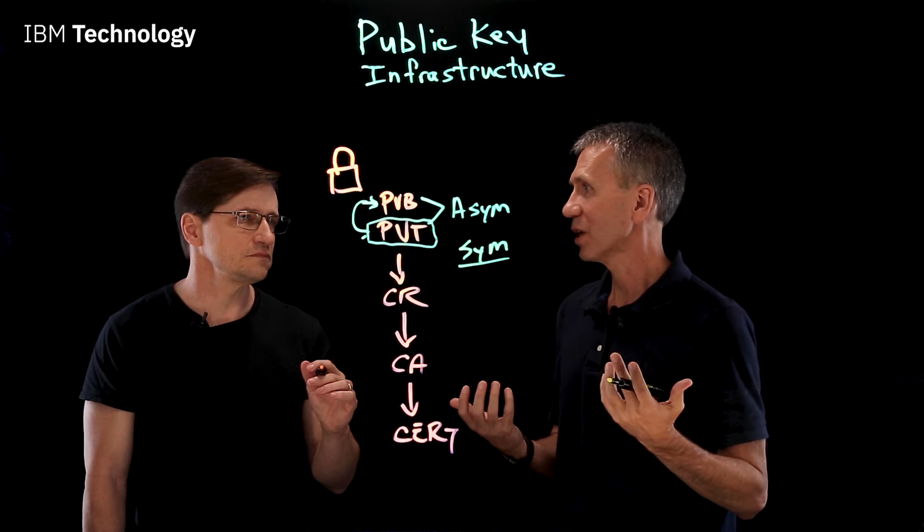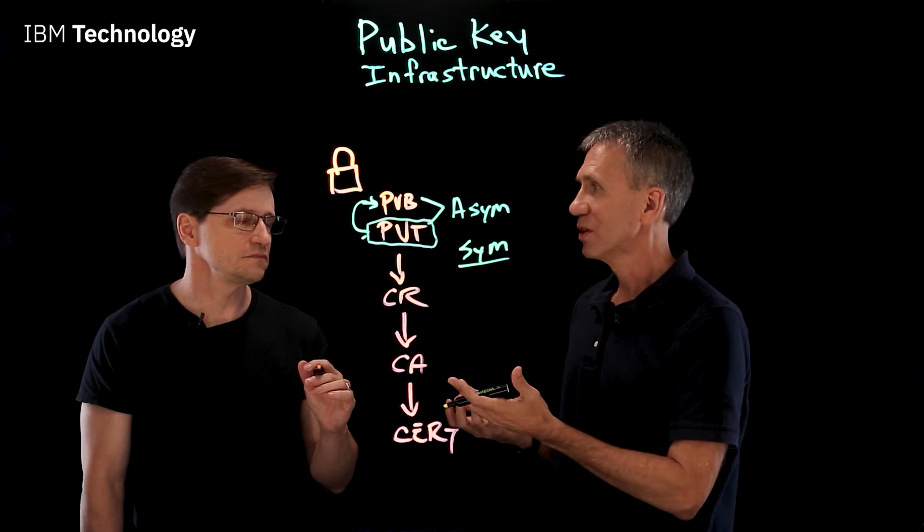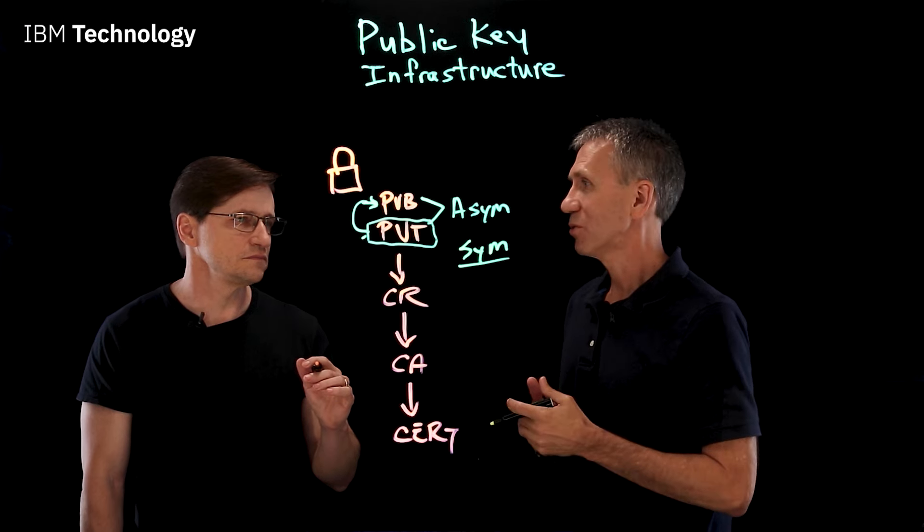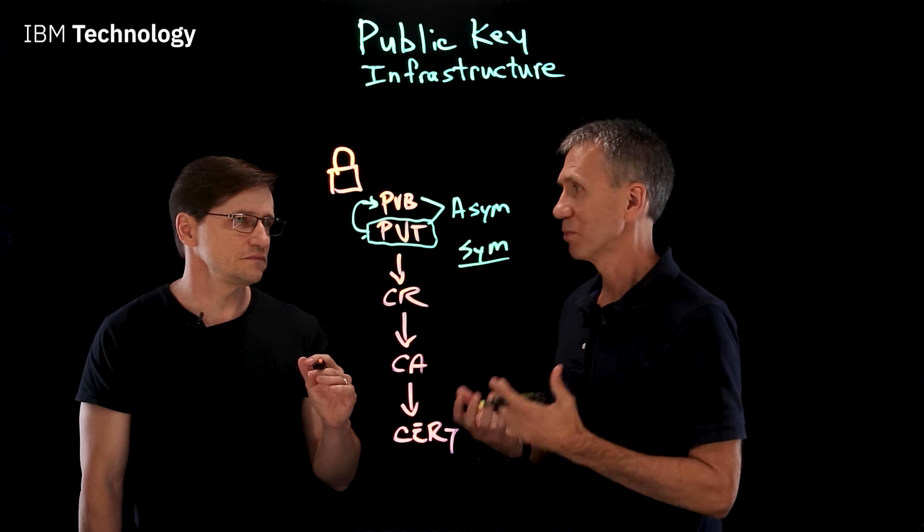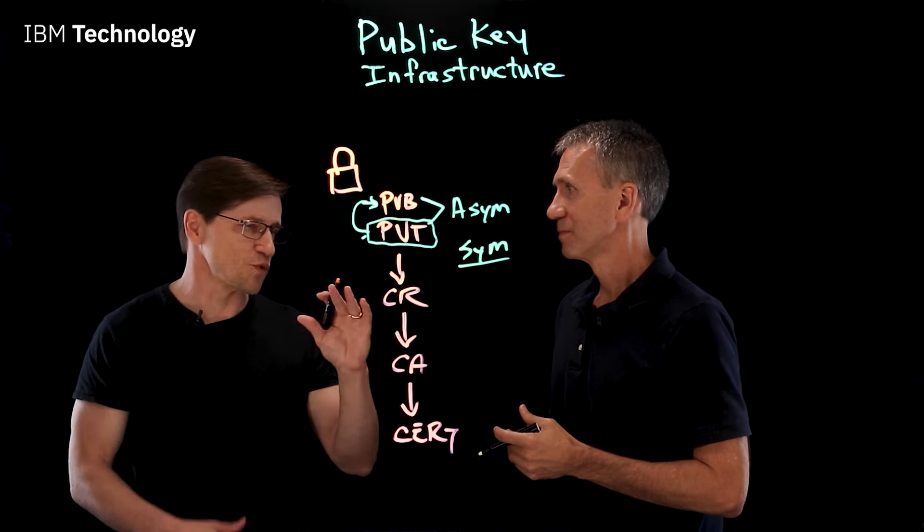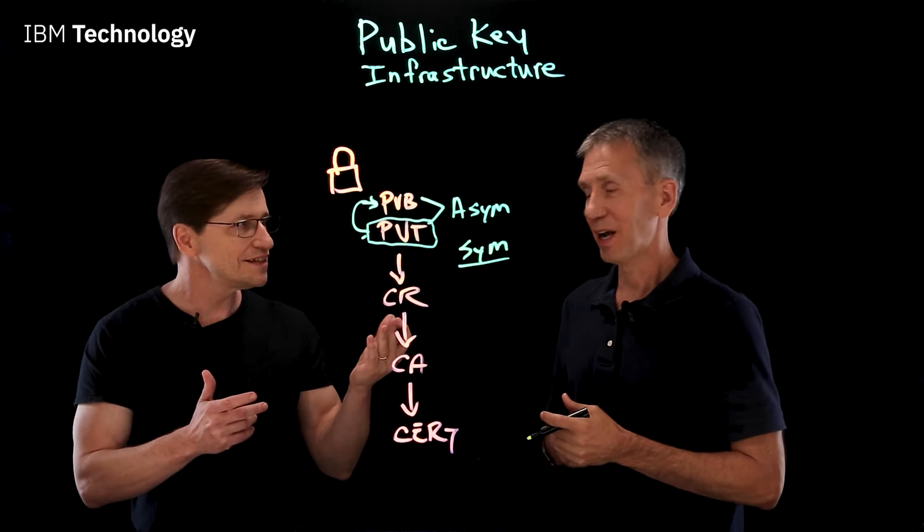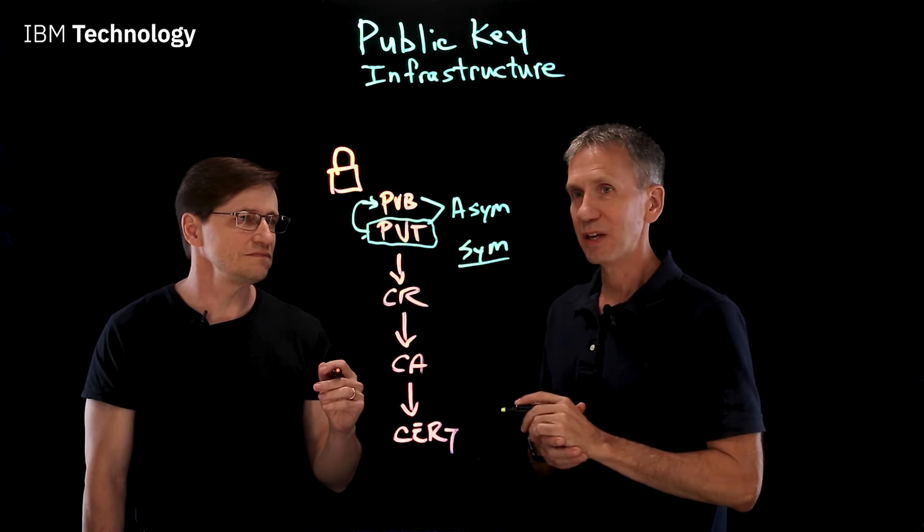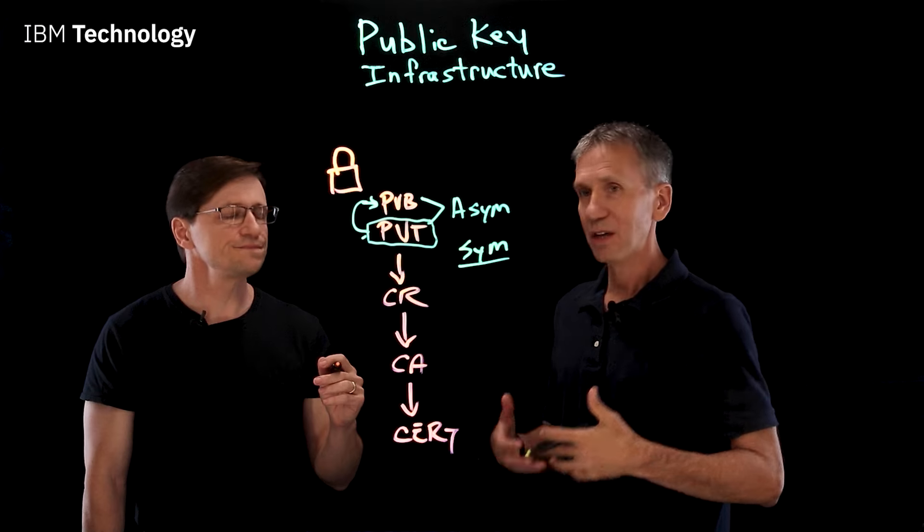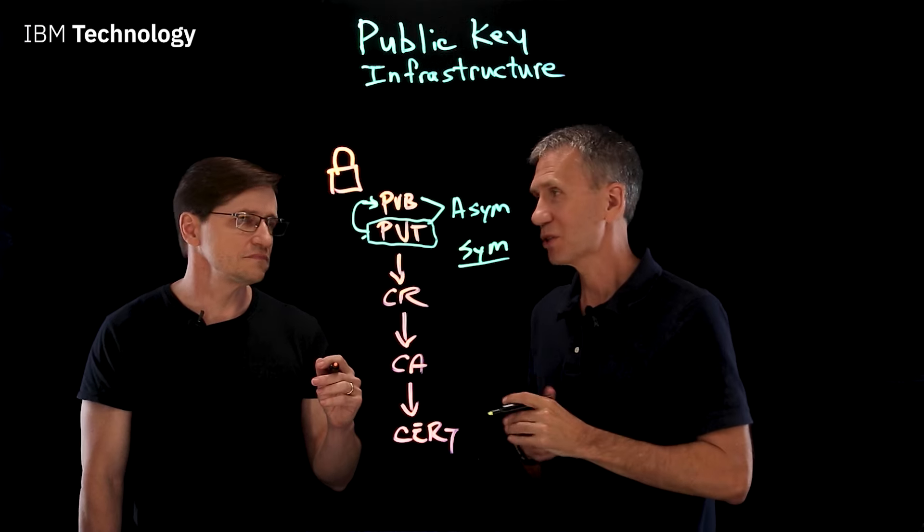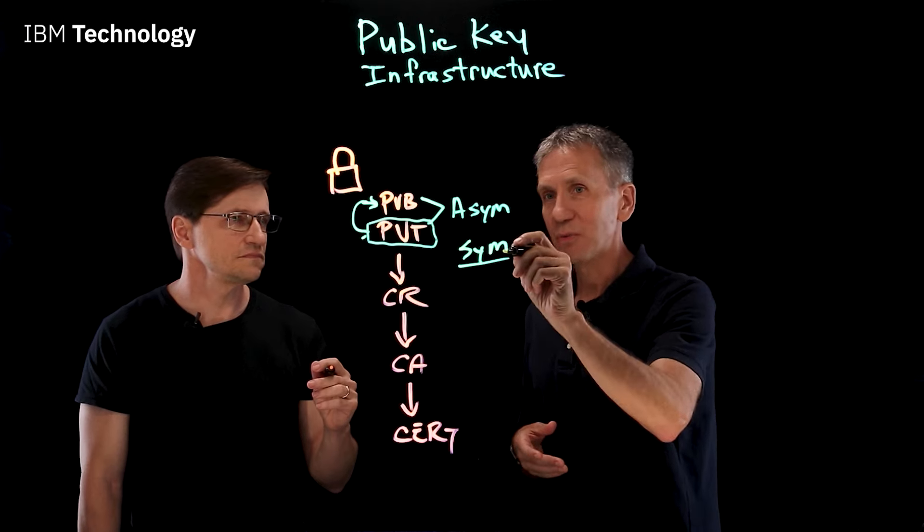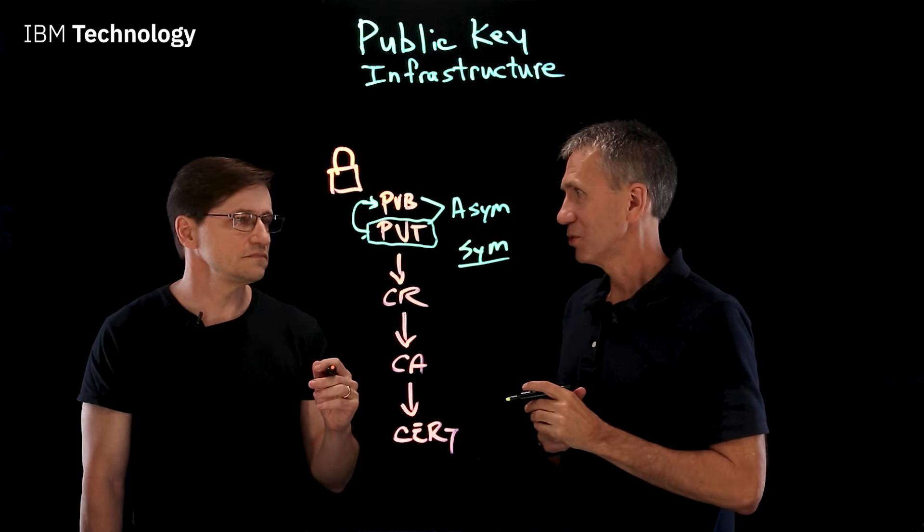If I send you a message that I've encrypted with this particular symmetric key, the only way you can decrypt it is to use the very same symmetric key. But that presents a problem for me getting that symmetric key to you, doesn't it? It absolutely does. So the advantage to symmetric key cryptography is that it's relatively efficient. It's fast compared to asymmetric, which is much, much slower.